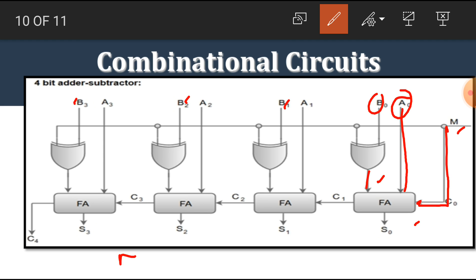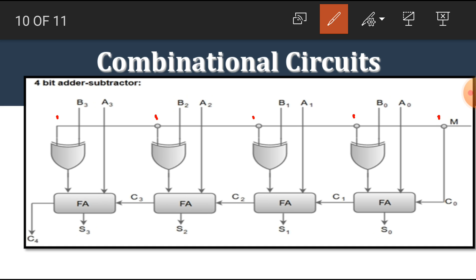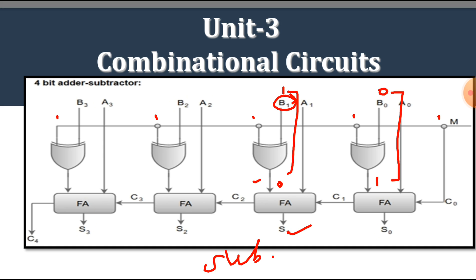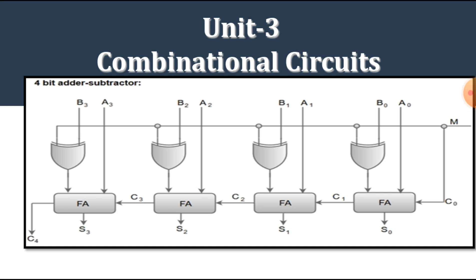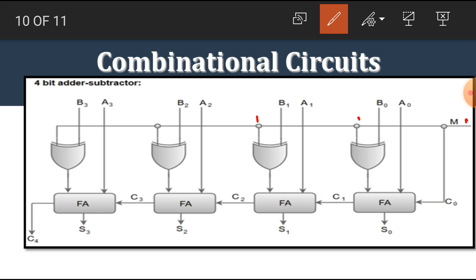If M has the value 1 and B0 has the value 0, then at the output we get 1 — the complement of B0. If B1 has the value 1, then the output of the XOR gate is 0, which is the complement of B. Hence this circuit performs subtraction. Similarly, if M has the value 0 and B has the value 0, then the output of the XOR gate is 0; if B1 has the value 1, the output is 1 — the same as B. That means the circuit performs the addition operation.